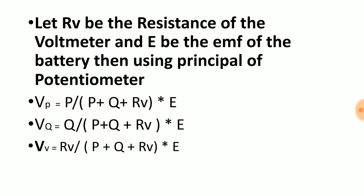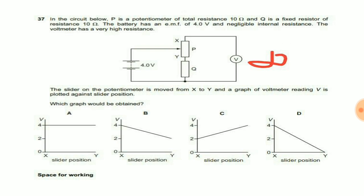VP = P divided by the total resistance of the circuit. There are three resistors: P, Q, and resistance of voltmeter, times emf.